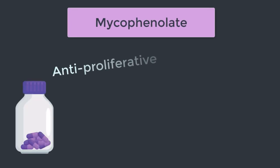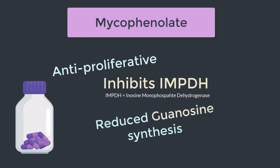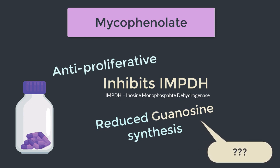Mycophenolate is an anti-proliferative agent, which means that it inhibits the cell cycle. It does this by inhibiting an enzyme called IMPDH, which is involved in guanosine synthesis. When it comes to molecular biochemistry, a brief refresher is always helpful — so let's touch on what guanosine is and what it actually does in this cell cycle situation.